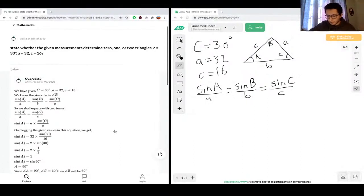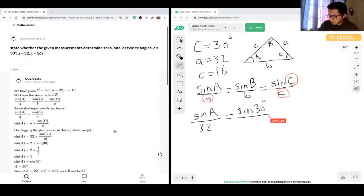So the first thing we can do, right away we recognize that we're given A, C, so we're given this variable and this variable, and we're also given the angle C. So we can right away see that we can use sine A over A equal to sine C over C to solve for the angle A. So doing that we'll say sine A over A, which is 32, is equal to sine C, which is 30 degrees, divided by C, which is 16.